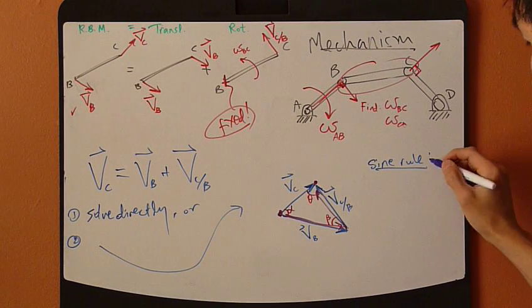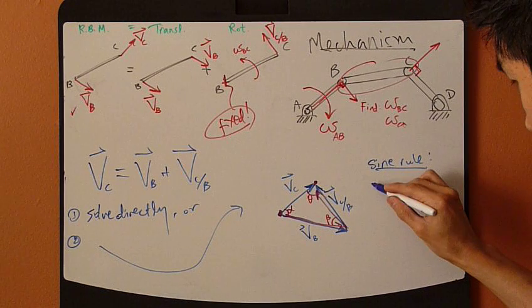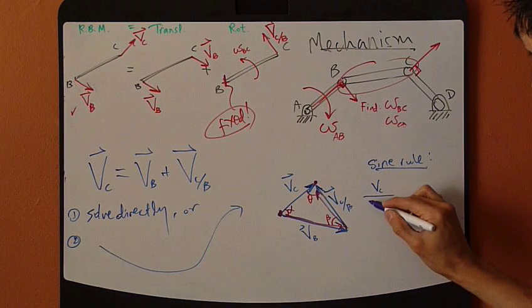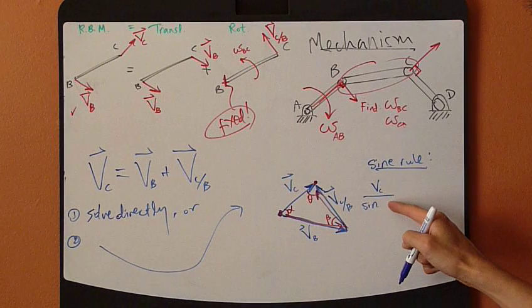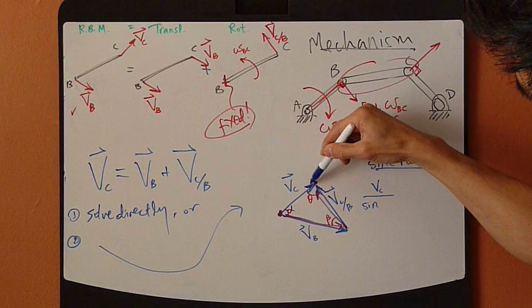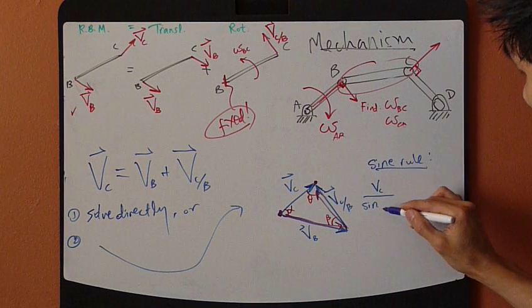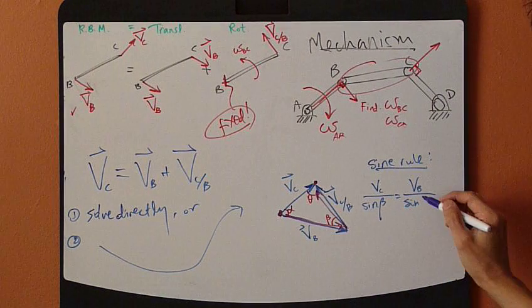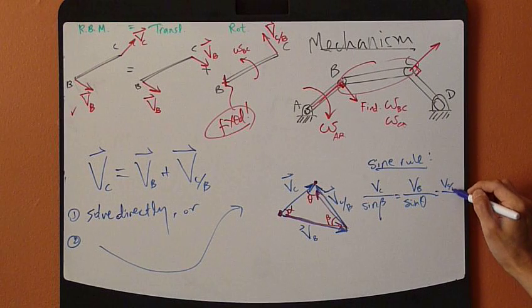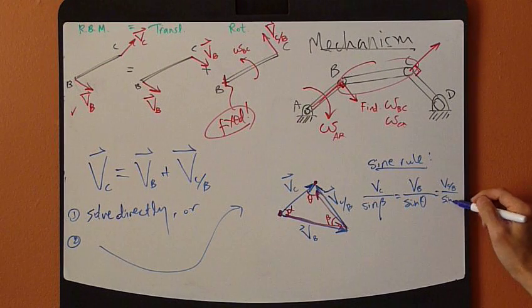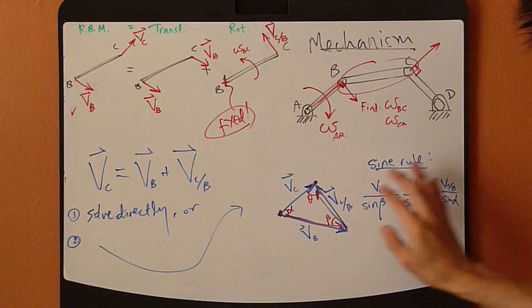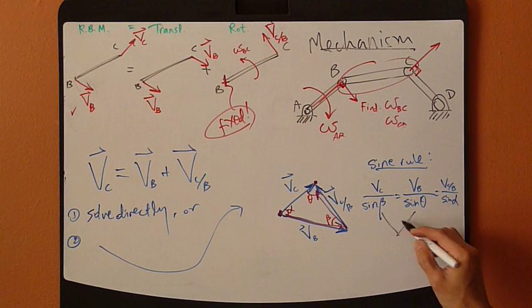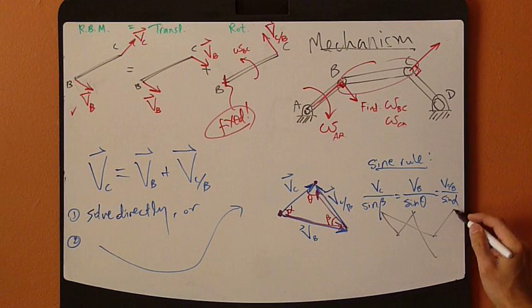The sine rule tells me the magnitude of VC over sine of the opposite angle - so VC is here, the opposite angle of C is theta - sine of theta equals VB divided by sine of beta equals VC/B, the magnitude divided by sine of alpha.